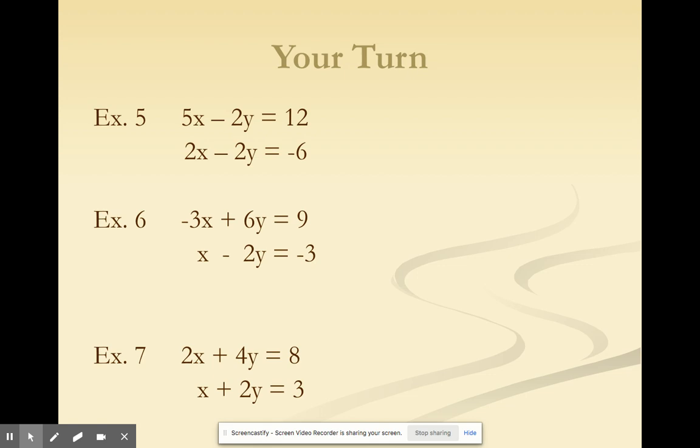So, you'll have 5 plus negative 2x, which will end up giving you 3x. We have negative 2y plus 2y, and that'll be 0. And then you have 12 plus 6, which is going to give you 18. Then you can go ahead and divide by 3. So, that'll be 6.